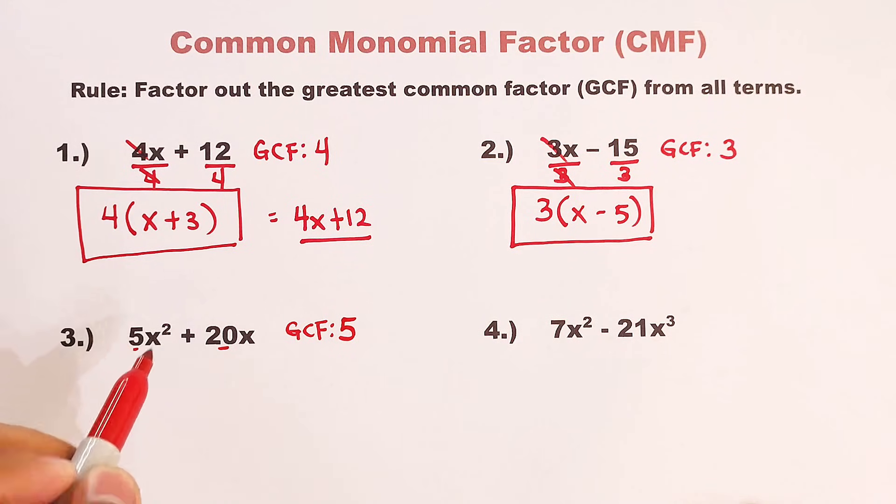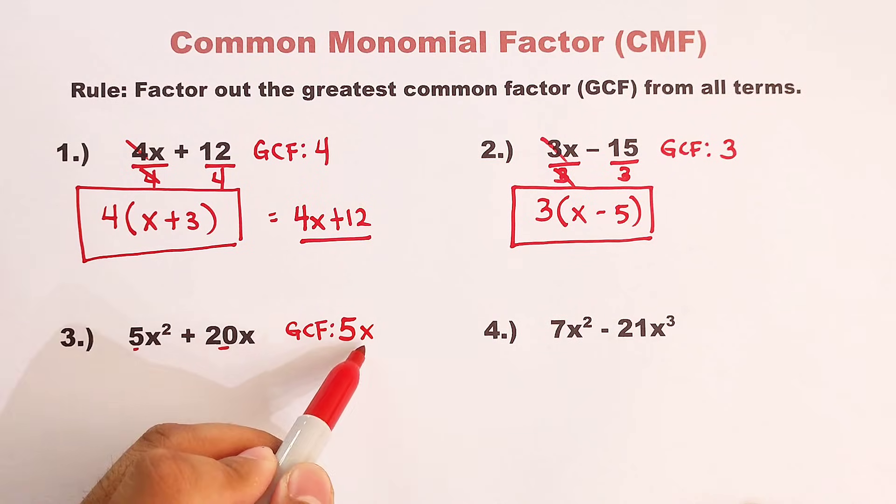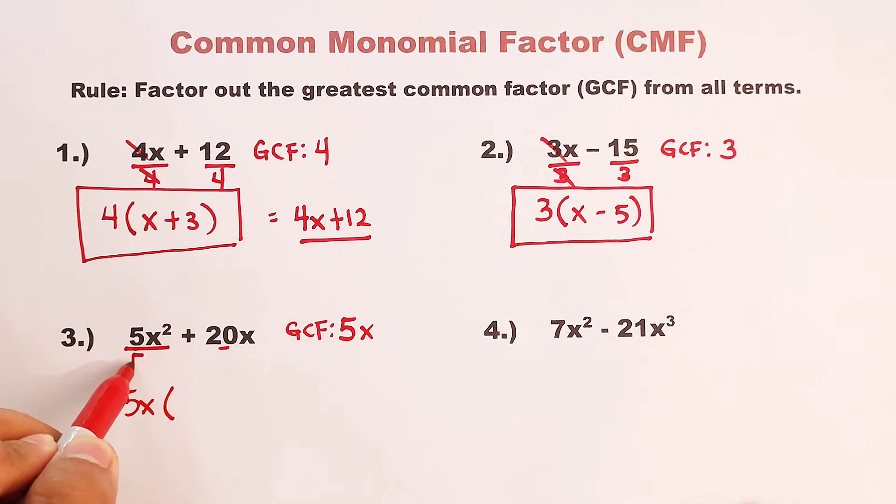And as for the variable, since the variable x is existing in the first and second term, here's the tip. Get the variable with the least exponent. Again, get the variable with the least exponent. So now, the variable with the least exponent is this x. So the GCF is 5x. So we have here 5x. Then divide each term by 5x. Cancel this. Cancel this.